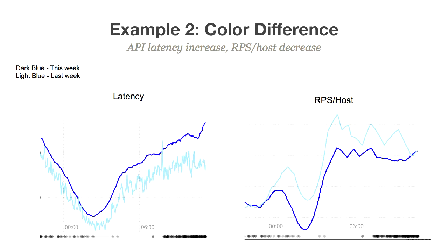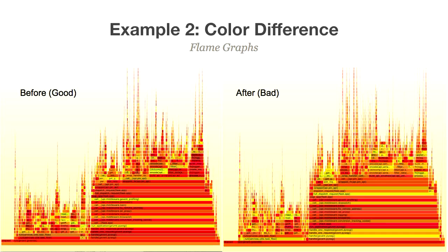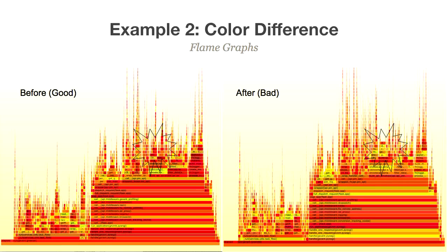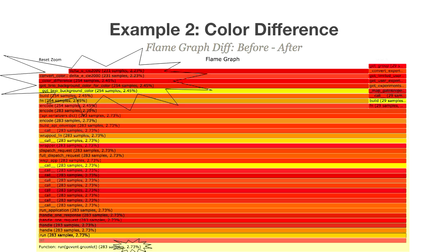Another example: one day in our metrics, we saw latency shoot up and efficiency go down. Previously this would be an unanswerable question taking a week to figure out. But with statistical data, it's easy. By diffing two flame graphs, we saw 2.7% of the time was in a function called delta_e_cie_2000. We found the commit that added that function, asked the developer, who said 'whoops sorry' and turned it off. Being able to detect regressions has become really powerful for us.